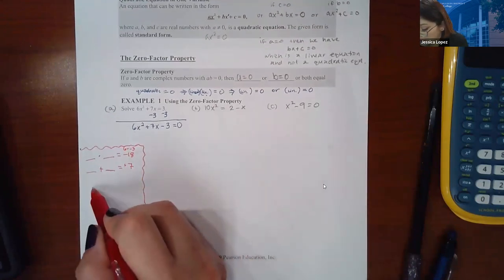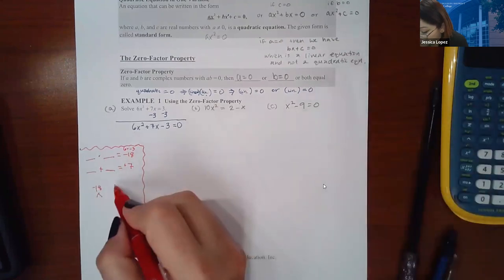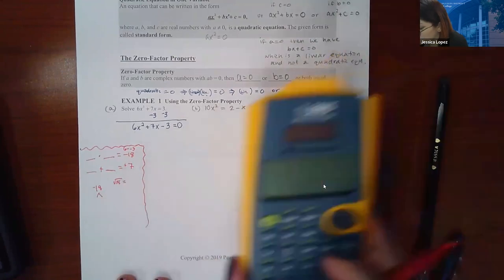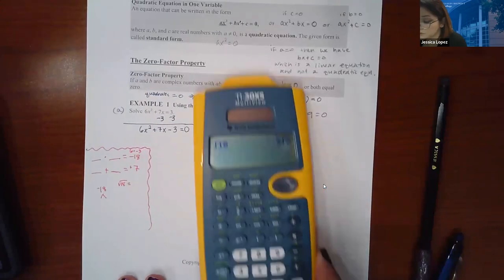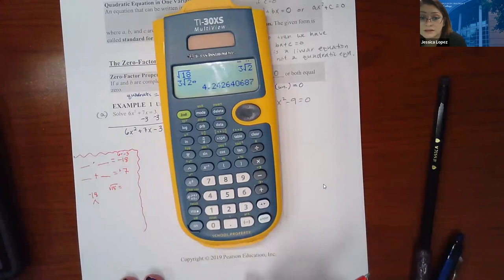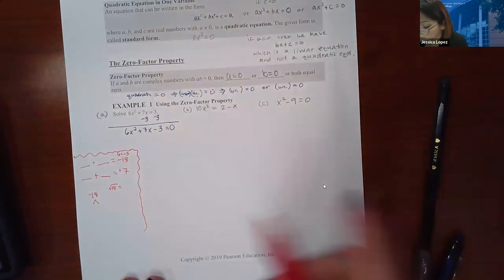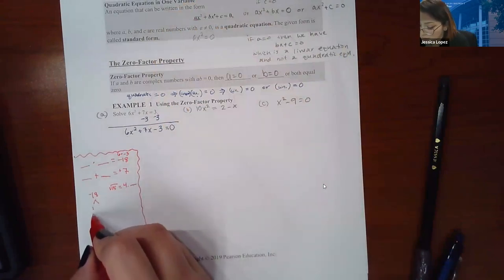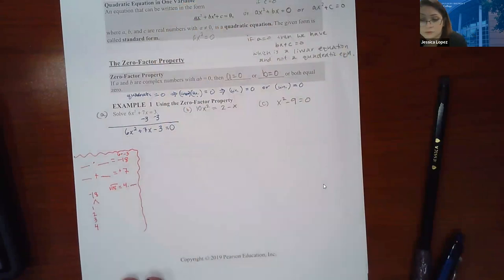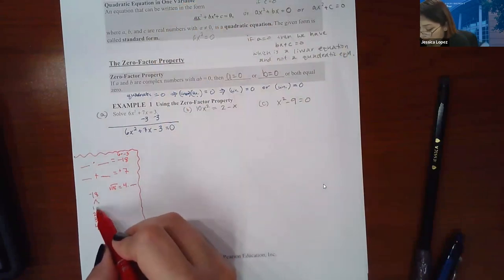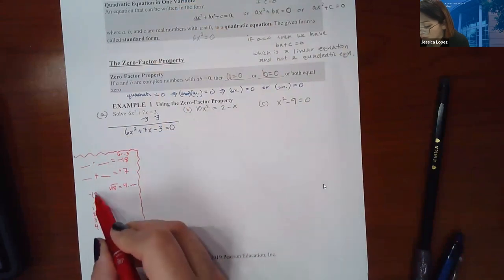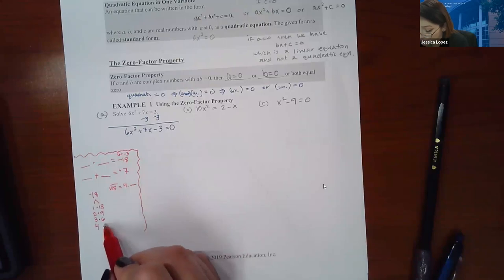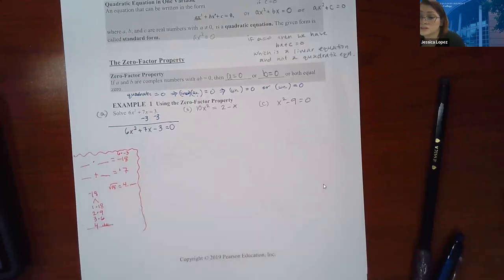Let's find the factors of negative 18. We'll do the little square root thing that we've always been doing. So the square root of 18 — I want a decimal, so I press the double arrow — and it gives me 4-point-something. That's all I need to know. So when I write my list, I go down to 4. And 18 divided by 1 is 18, divided by 2 is 9, divided by 3 is 6, and divided by 4 is a decimal, so that's not a usable pair.